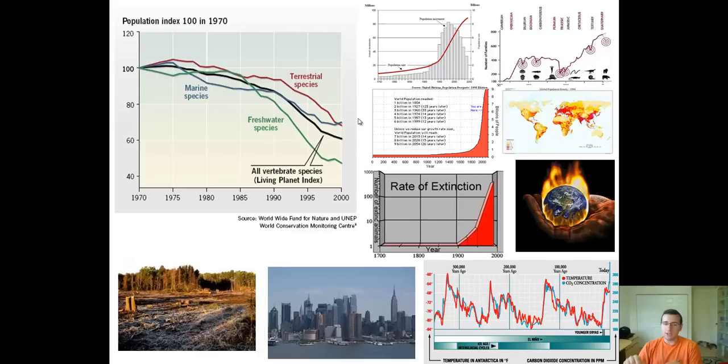And this extinction will probably be worse than the Permian extinction if it doesn't stop very soon. And because the rates of the extinction right now are worse than the worst extinction that ever happened in the natural history of the world.